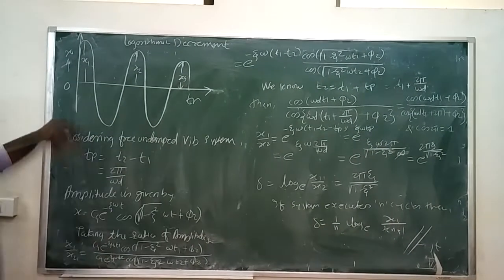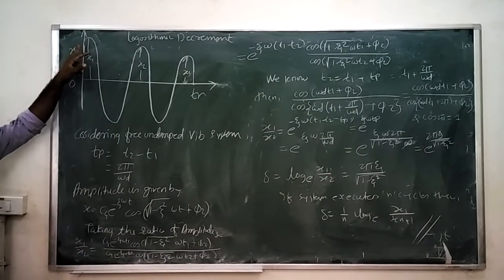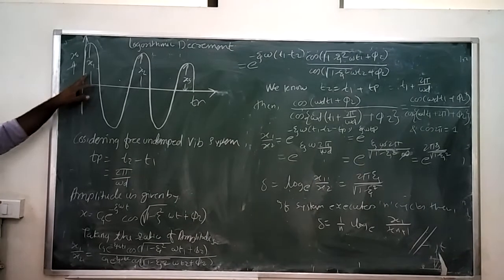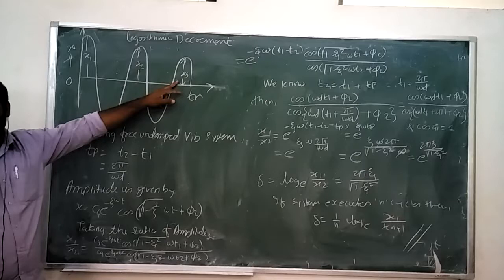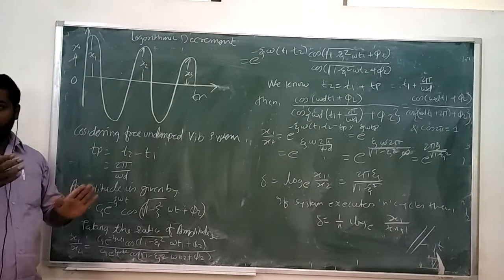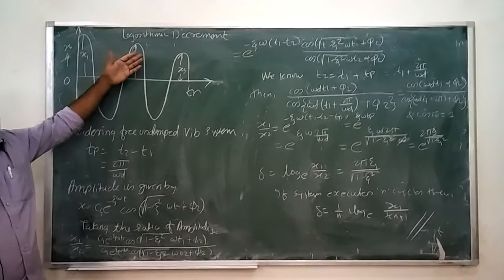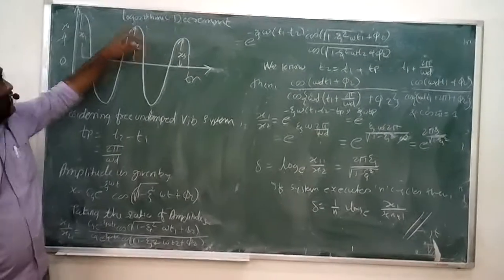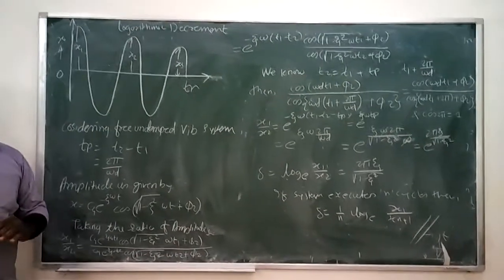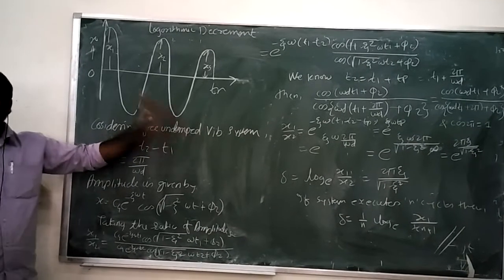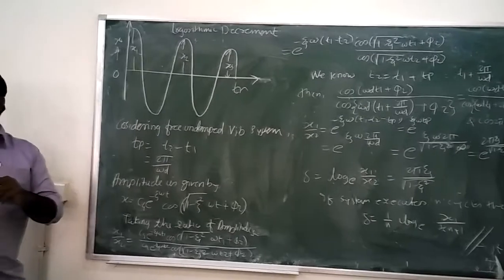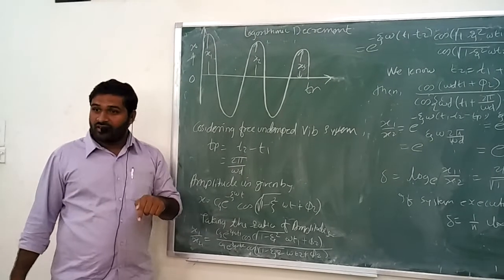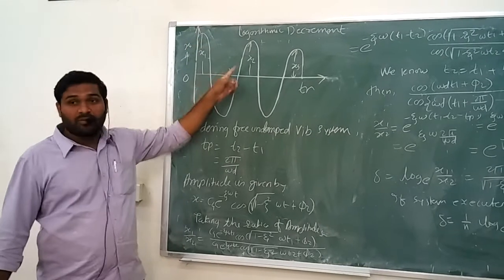In this diagram, x is the amplitude and the horizontal axis is time, so the graph is drawn between amplitude and time. x1 is the first amplitude, next is x2, and third is x3. We have to calculate the decrement of the amplitude from one point to the next — that is called the logarithmic decrement. We are considering a forced undamped vibrational system, because logarithmic decrement is possible only when the decaying plus-minus sign waves are generated.